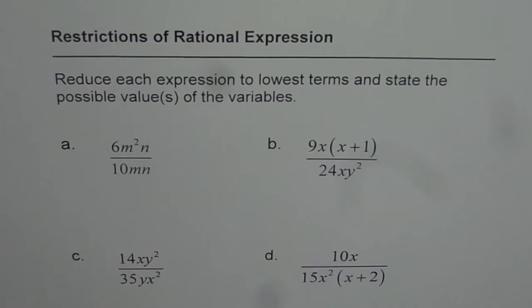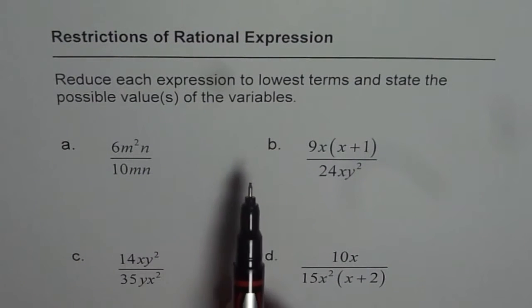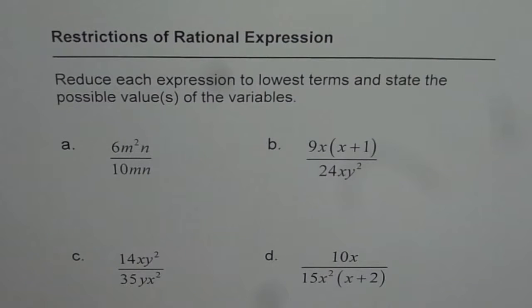Restrictions of rational expression. Reduce each expression to lowest terms and state the possible values of the variables. We have four examples here. Remember, the possible values are all real numbers except for restrictions.